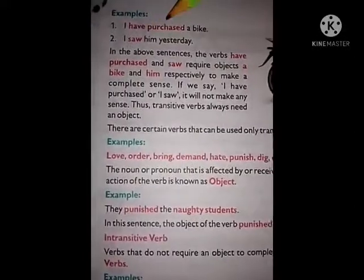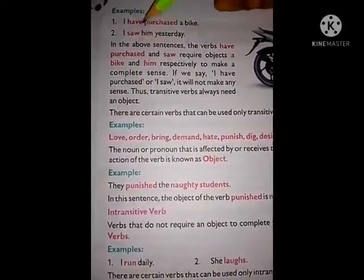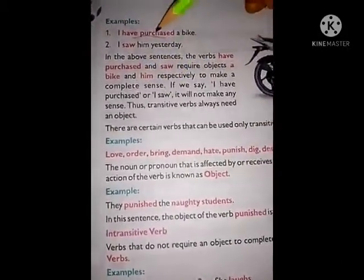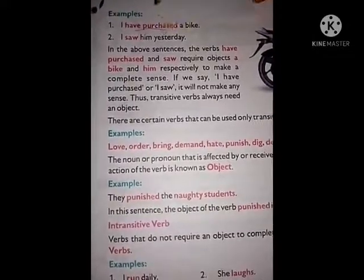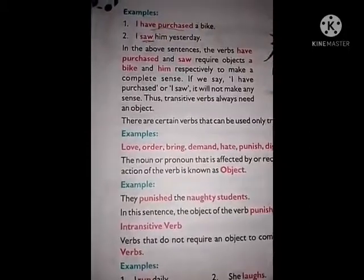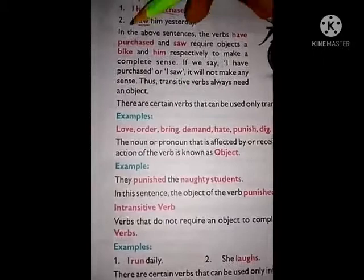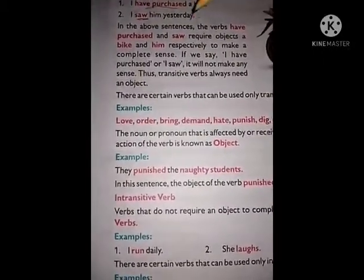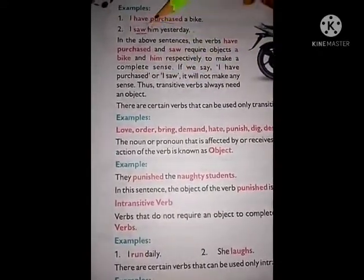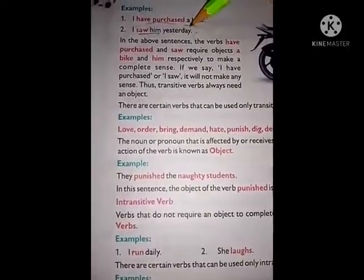See examples. Number 1: 'I have purchased a bike.' Number 2: 'I saw him yesterday.' In the above sentences, the verbs 'have purchased' and 'saw' require objects — 'a bike' and 'him' respectively — to make a complete sense. If we say 'I saw' or 'I have purchased' alone, it will not make any sense. Thus transitive verbs always need an object.